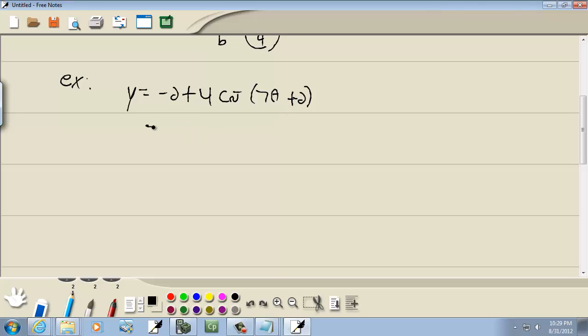Again, we don't want to decide anything until we factor out the number in front of theta or x or whatever variable we have. So I'm going to factor out a 7, and that gives us theta plus 2 sevenths.